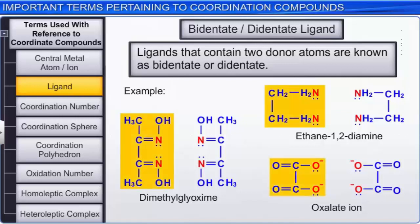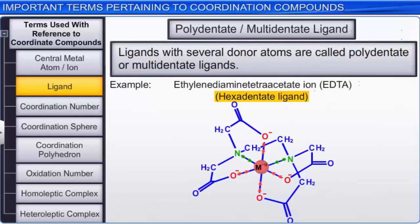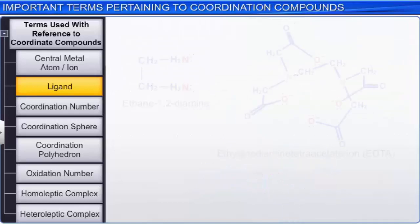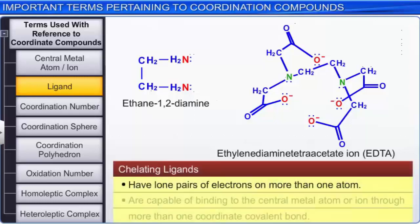Ligands with several donor atoms are called polydentate or multidentate ligands. A classic example of a polydentate ligand is the hexadentate ligand ethylenediamine tetraacetate ion, EDTA. It binds to the central metal ion through two nitrogen and four oxygen atoms. Ligands like ethylenediamine and EDTA, which have lone pairs of electrons on more than one atom, are capable of binding to the central metal atom or ion through more than one coordinate covalent bond. Such ligands are called chelating ligands.